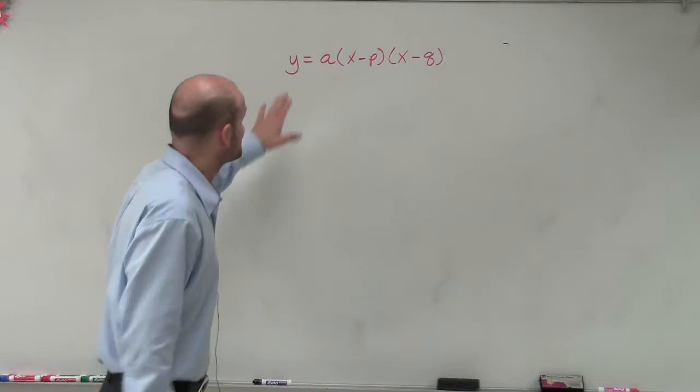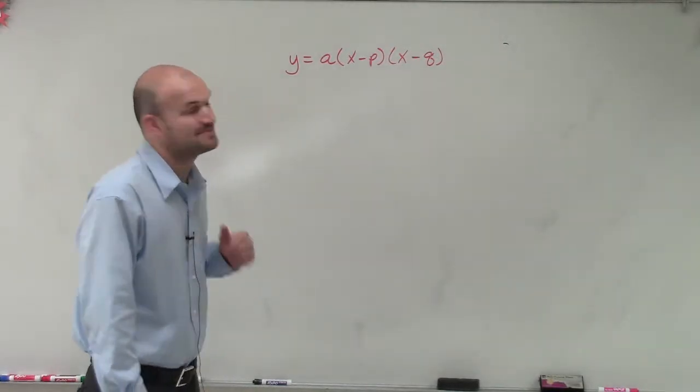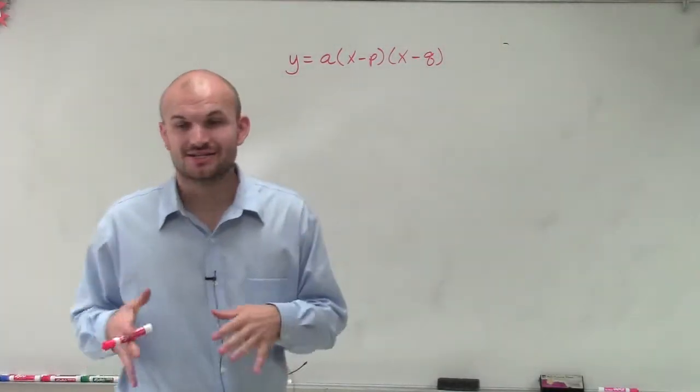Welcome. So what we have here is y equals a times x minus p times x minus q. And this is called our intercept form.